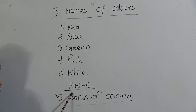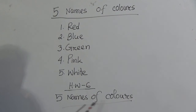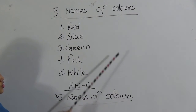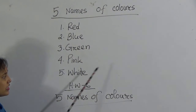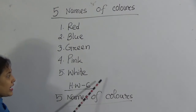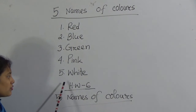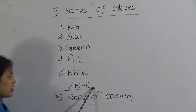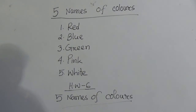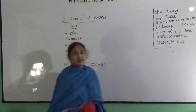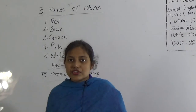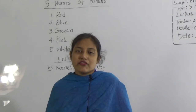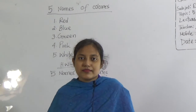And students, your homework number 6 is 5 names of colors. That means today's lesson is your homework. You have to write homework number 6: 5 names of colors. Students, that's all for today. Stay safe, stay well, take care. I love this. Thanks.